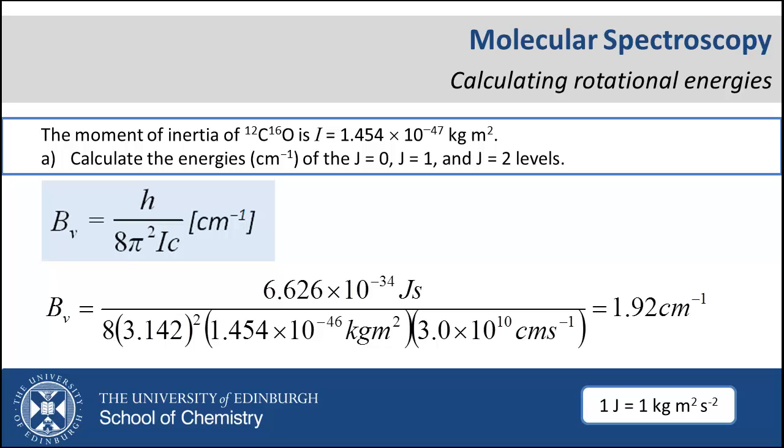The base SI units of joules are shown. Note that we use speed of light in units of centimeters per second and not meters per second. Thus, we can calculate the rotational constant B as 1.92 wavenumbers.